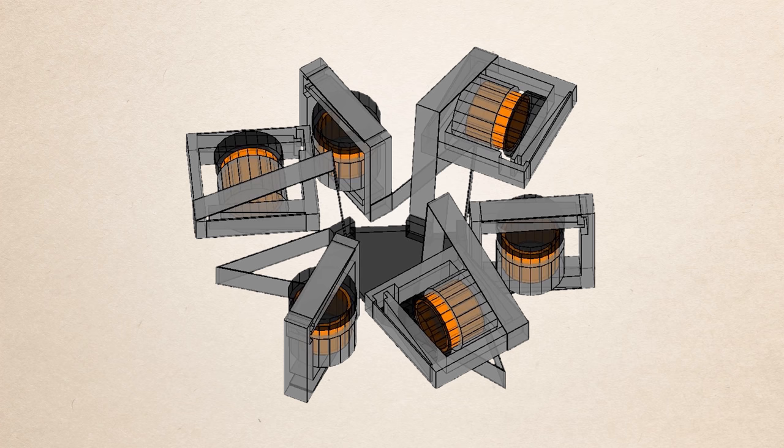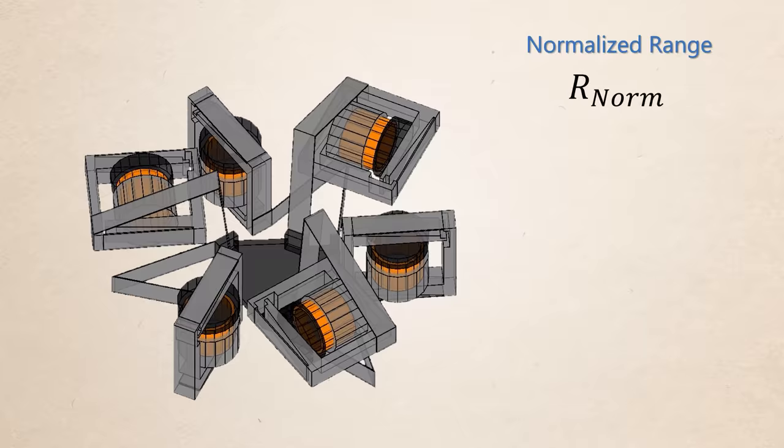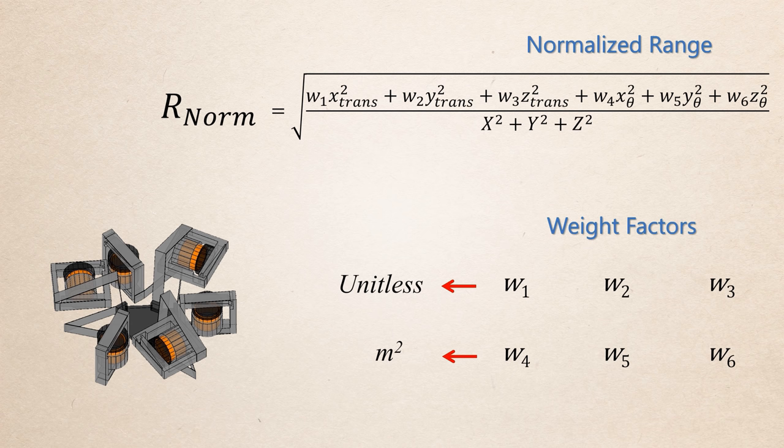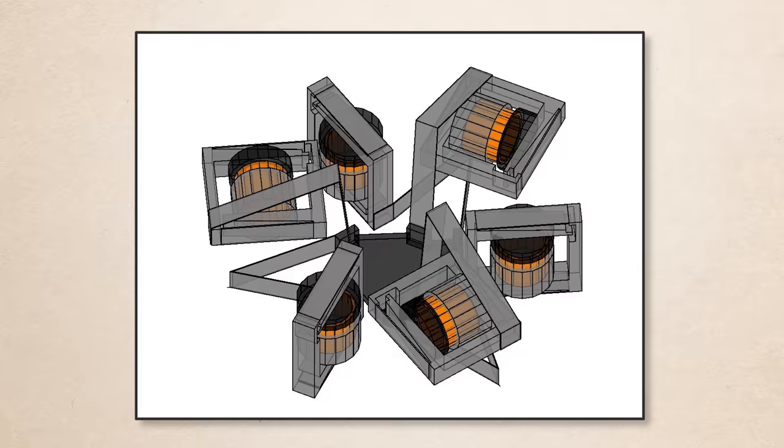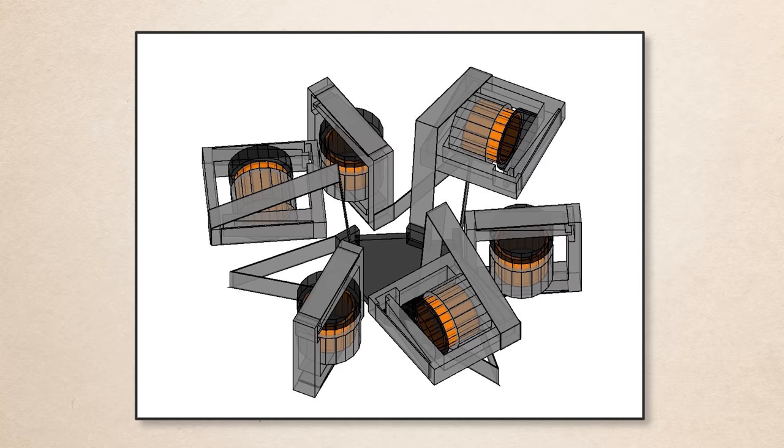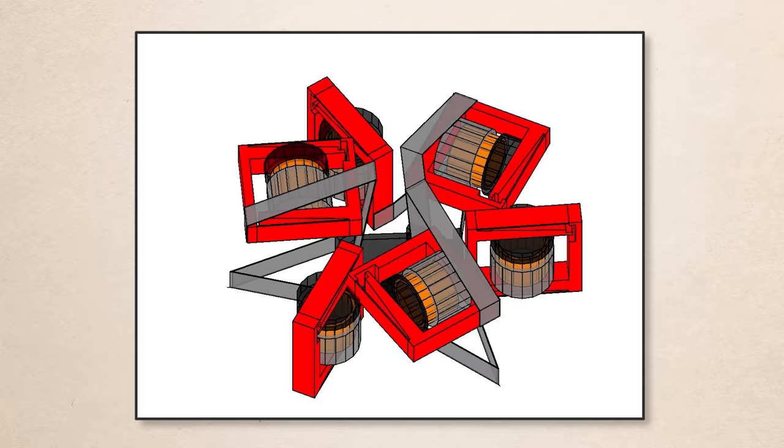After all of the maximum displacements corresponding to all six axes have been calculated, the design's normalized range, R-norm, is then calculated according to this equation where W1 through W6 are weight factors that are specified according to the importance of each degree of freedom according to a particular application of interest. X, Y, and Z are the side lengths of the smallest rectangular volume inside of which the design could fit. The MATLAB tool then performs a sweep of the design's parameters and calculates these values, i.e. the speed and range of each design version, to ultimately generate the boundary of the hex blade's full performance space for a specific set of weight factors.